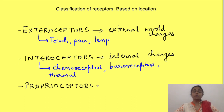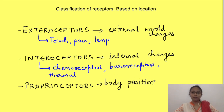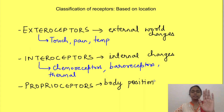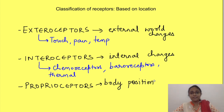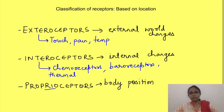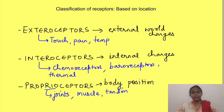The third type of receptors based on location are proprioceptors, which detect changes in the position of the body. For example, if you close your eyes and hold one hand in a particular position, you can place the other hand in the same position with your eyes closed. You are able to do this because information about the position of your body reaches the CNS via proprioceptors, which are present in joints, muscle bellies, and tendons. This shows that the location of a receptor is important for providing information about the location of the stimulus.